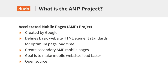AMP is a project that was originally started by Google. They announced it back in late September or early October of 2015. Essentially, it's a way to make mobile web pages load extremely fast. Google is coming out and saying, build web pages in this very specific and limited way, and we can guarantee that these pages are going to load quickly on mobile devices specifically.